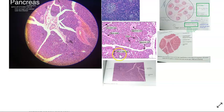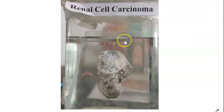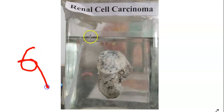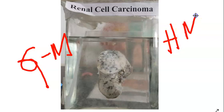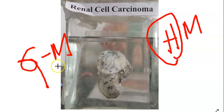For example, this is how the pancreas appears under the microscope — that is histology. Here is a kidney showing renal cell carcinoma. How it looks is the morphology — gross morphology if viewed with the naked eye, or microscopic morphology (histology) if viewed under the microscope.